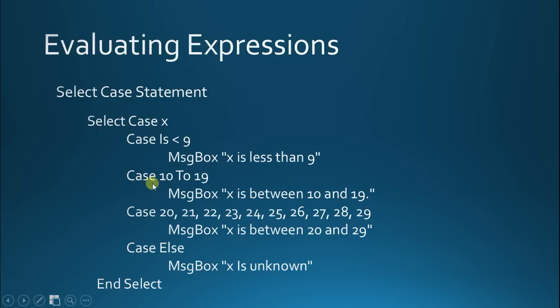So, the next possibility is you can use the to keyword. And what we're doing here is we're saying, check to see if x is between 10 and 19, and including 10 and 19. So, is x 10, 11, 12, 13, 14, 15, 16, 17, 18, or 19? If it's any of those numbers, then pop up a little message box that says x is between 10 and 19.